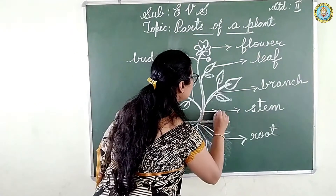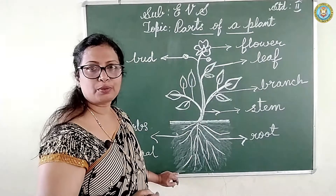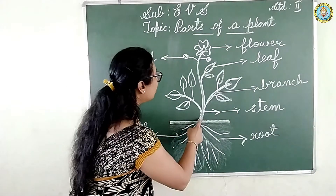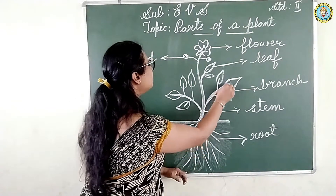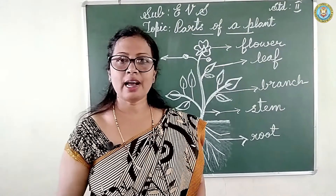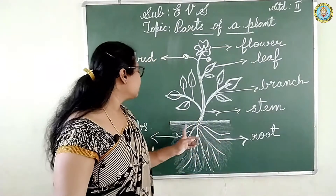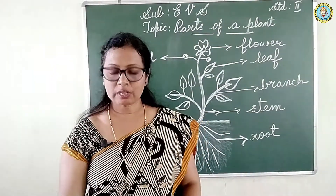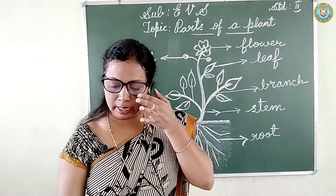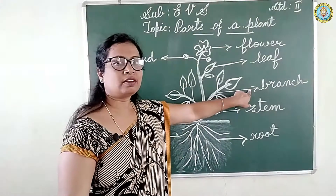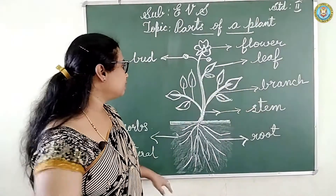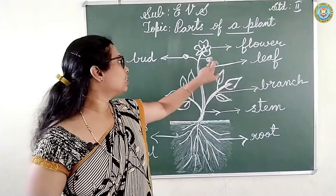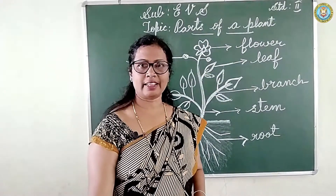What is the function of the stem? The stem carries water and food absorbed by the root and supplies it to all the parts of the plant. What is the branch? The branch bears leaves, fruits, and flowers.